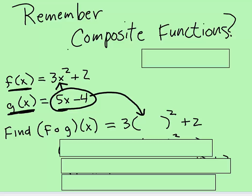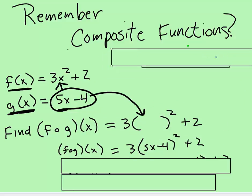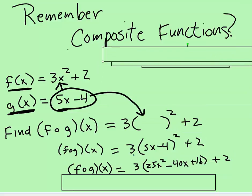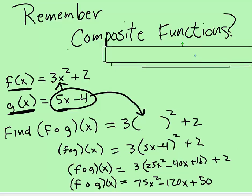So 5x subtract 4 times 5x subtract 4, and then you have to multiply each one of these things by 3. And then whichever of the terms that you can add at the end, you combine terms and there you have it.